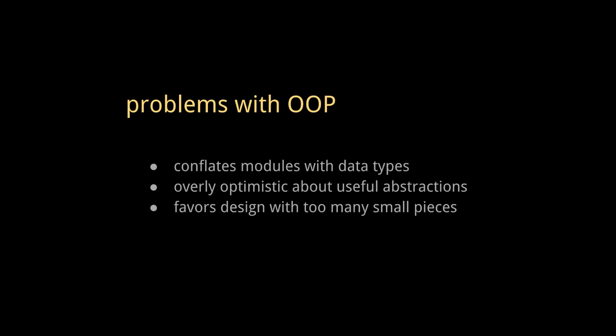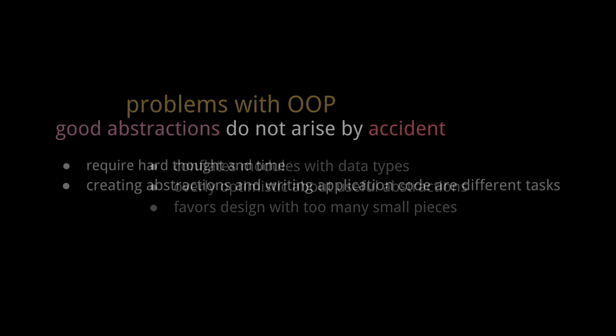So, that's actually all I have to say about how to structure code. I think it's a relatively simple picture overall. I'll end, though, by elaborating on what I think this implies, that OO gets wrong. As already discussed, OO conflates modules of encapsulation with data types. Second, OO is overly optimistic about how frequently and easily we can create good abstractions. And third, OO favors design with too many small pieces.